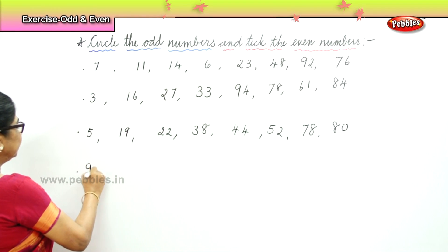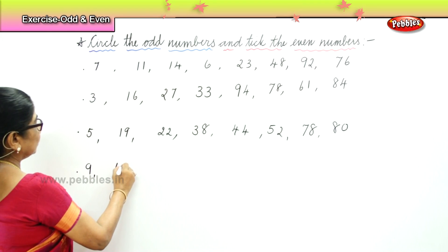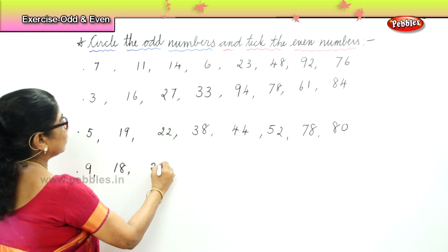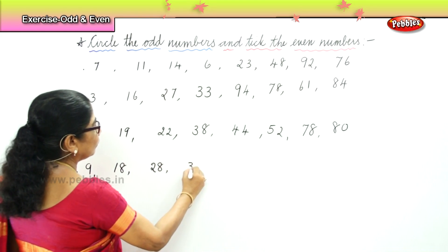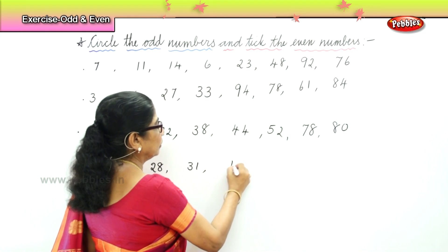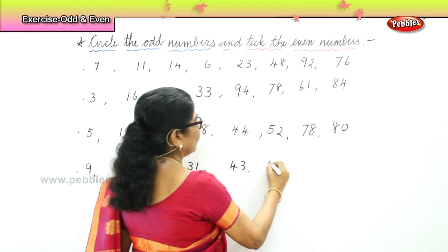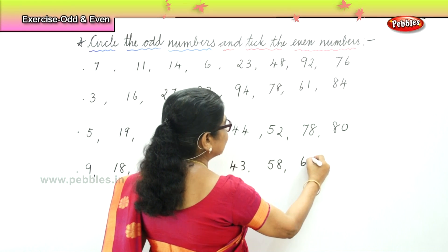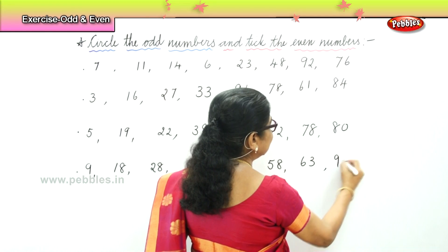Another set. Set D: You have 9, 18, 28, 31, 43, 58, 63, and 96.